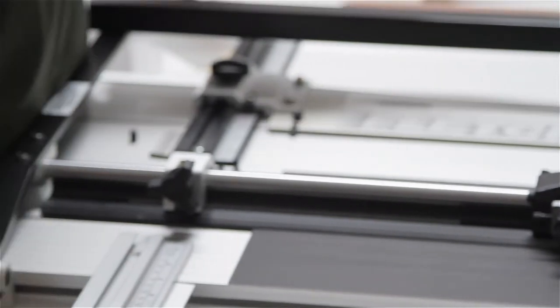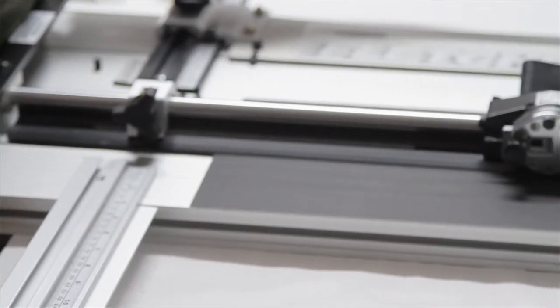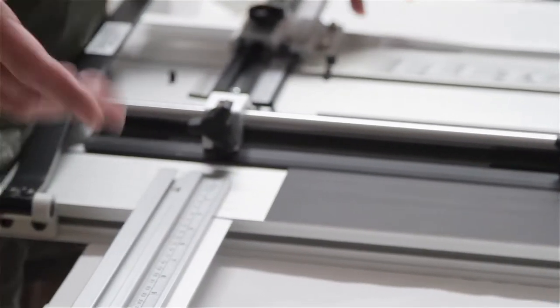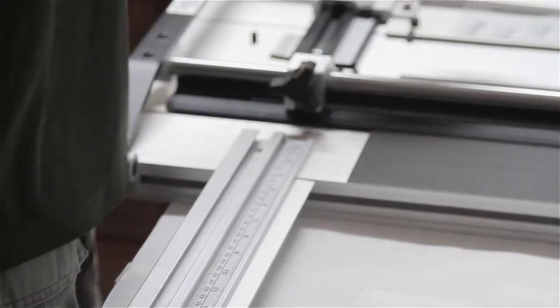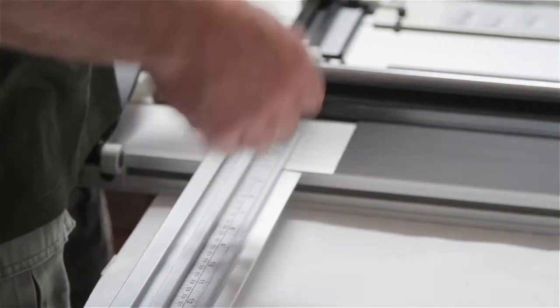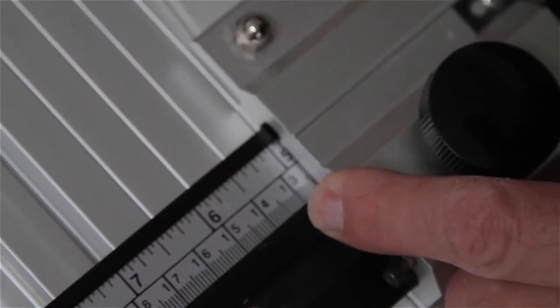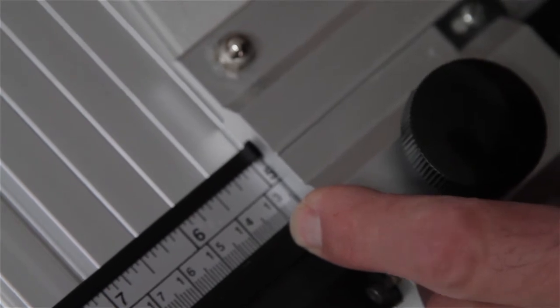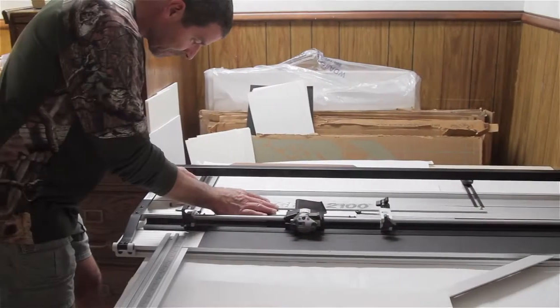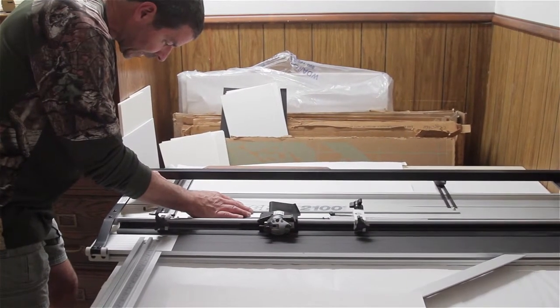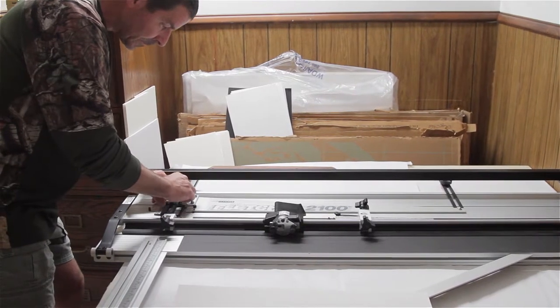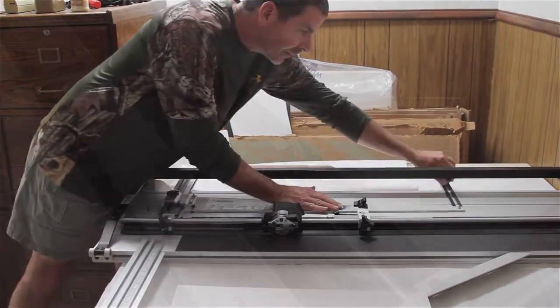First thing I'm going to do is set the stops. We're cutting all four sides at two and three-eighths. I'll set the bottom one at two and three-eighths, and the top one at two and three-eighths and lock it down.